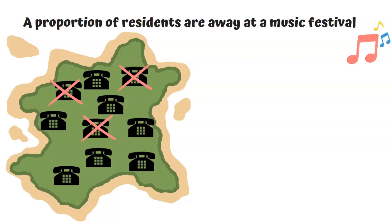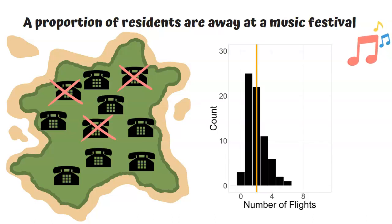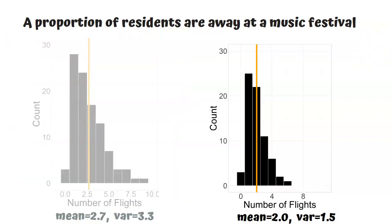In the second scenario, a third of the people again don't respond, but this time it's because these people are away at a music festival on another island. These people are actually some of the people who travel the most. So with those people not represented, your distribution looks like this. Let's compare this to what the distribution looks like if everyone responds. Now you can see that some of the higher values have disappeared and the mean has gone down and so has the variance.